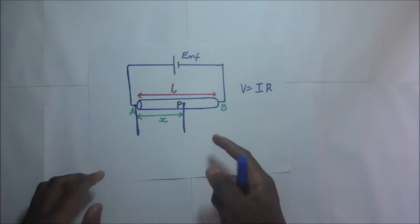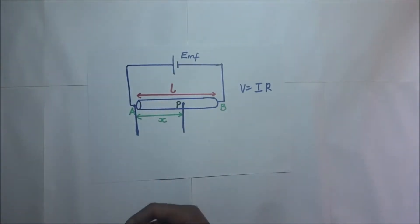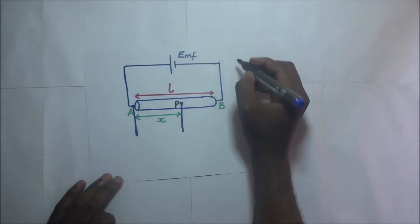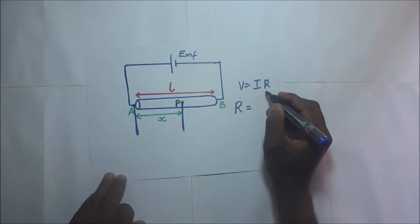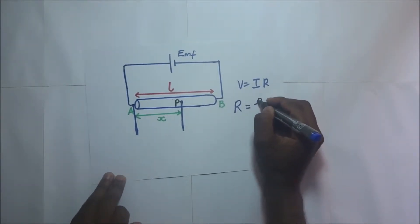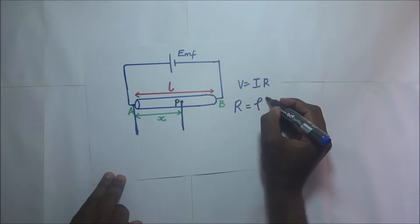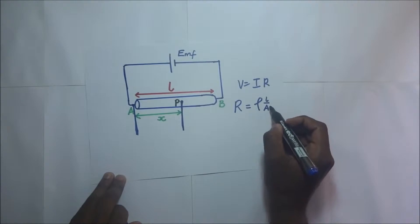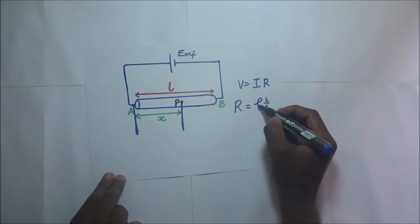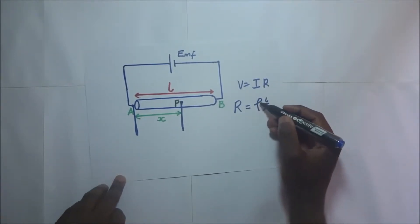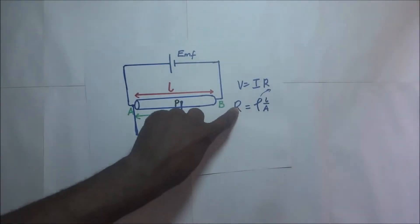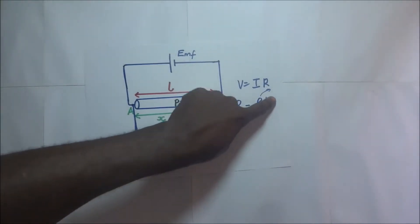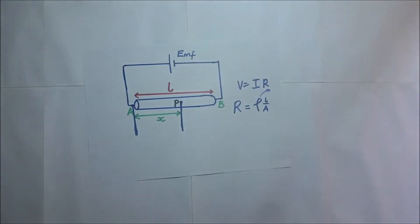Now, speaking of the resistance of this slide wire, we are going to use our formula for resistivity. We know that resistance can be expressed as the resistivity of the wire times the length of the wire over the cross-sectional area, where A is the cross-sectional area, L is the length of the wire, and ρ is the resistivity of the wire. If we use this value to substitute it, this is how things will turn out.